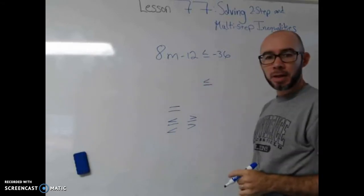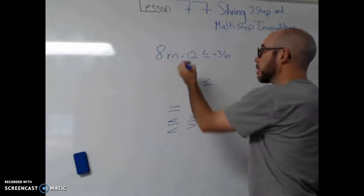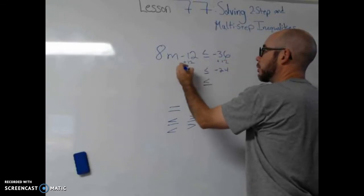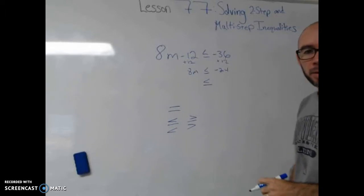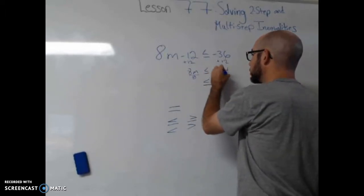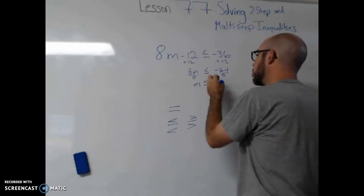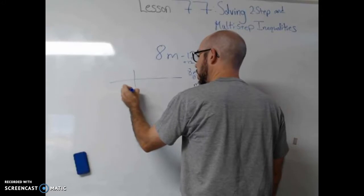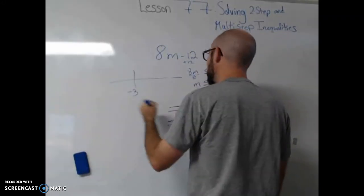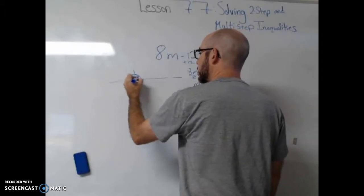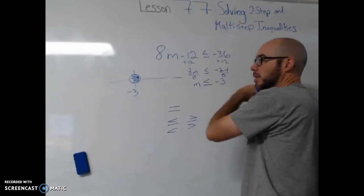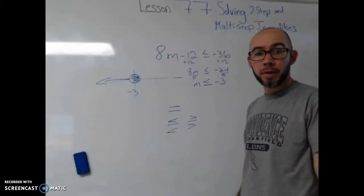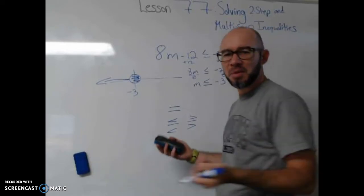Our answer is going to end up having the inequality sign like that. We start off by adding 12 to both sides, which gives us negative 24 on one side and 8M on the other. Then there's one step left: divide both sides by 8, which gives you M is less than or equal to negative 3. We draw a number line, put negative 3 on there, and since it's less than or equal to we fill in that circle. Since the variable is on the left, that arrow must go this way, and we've got our graph. Pretty straightforward.